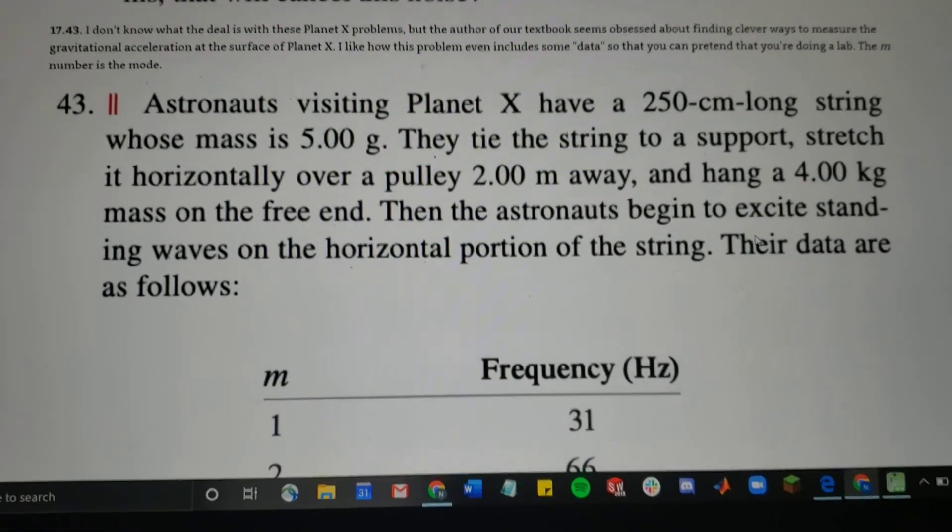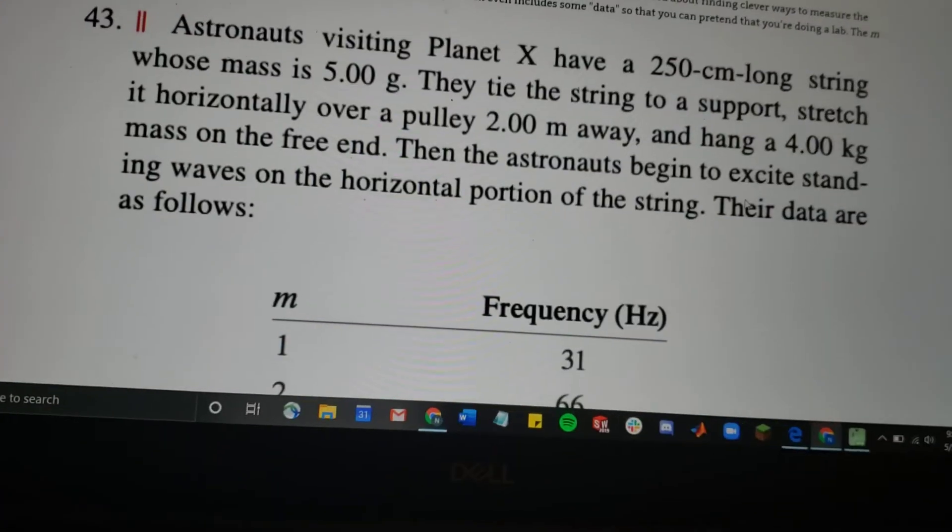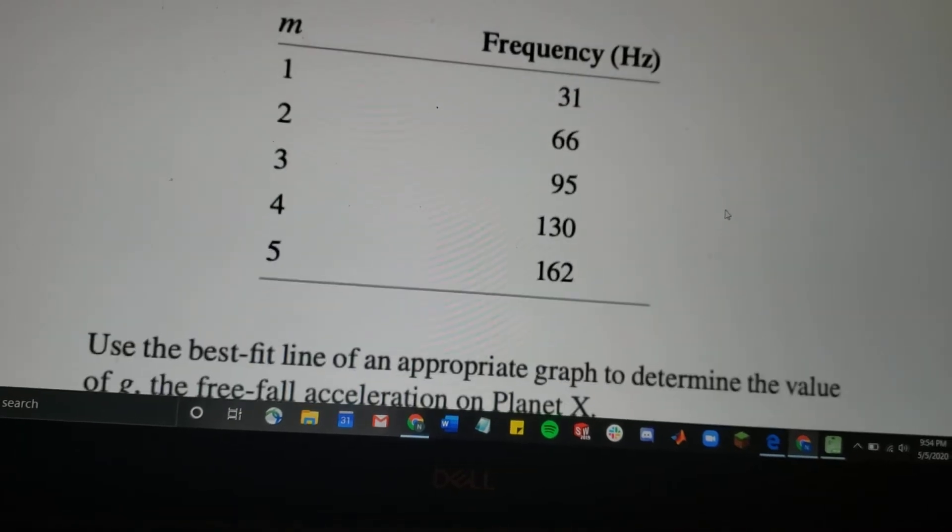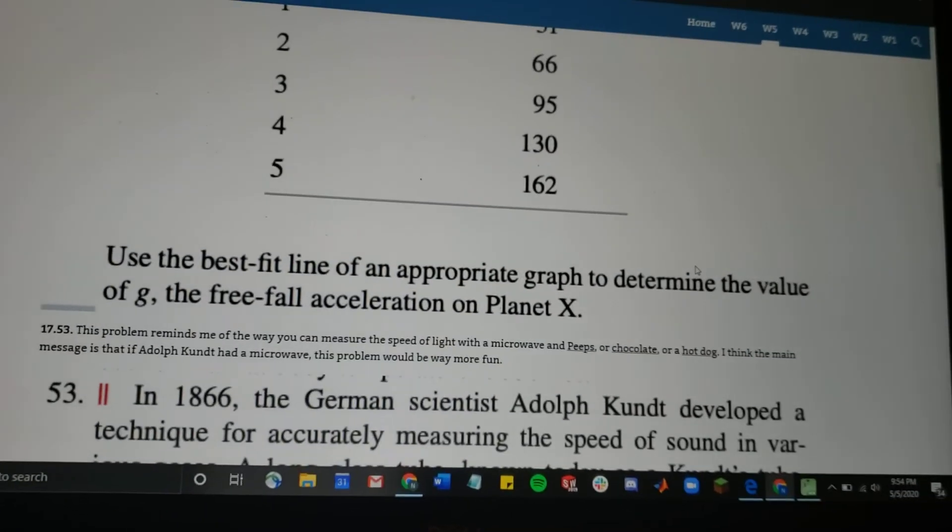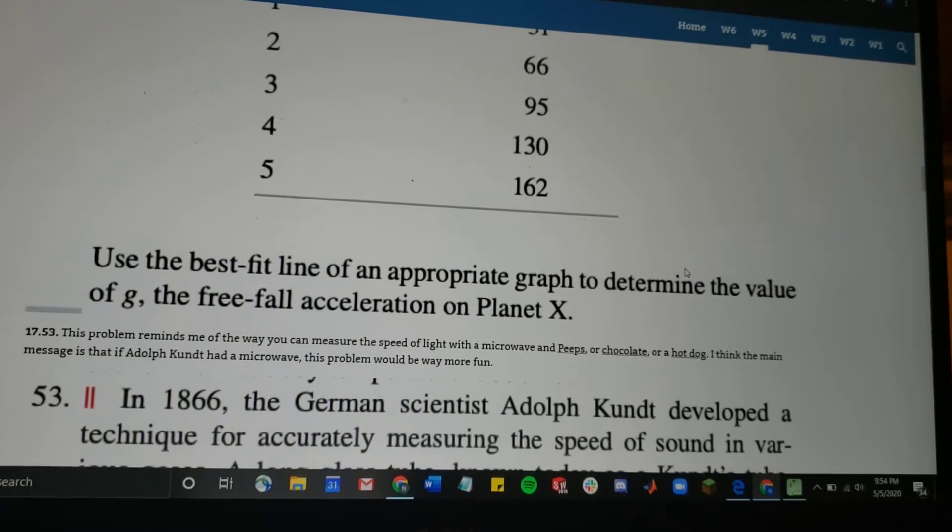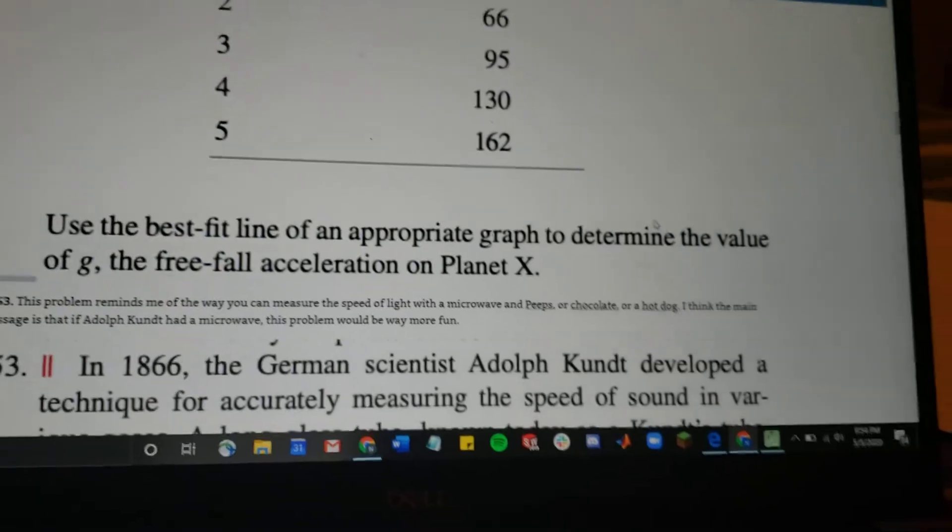Then the astronauts begin to excite the string, or excite standing waves on the string. And then they get this data from that, which is mass time versus frequency. And then the problem says to use the best fit line of the graph to data to determine the value of gravity on planet X.